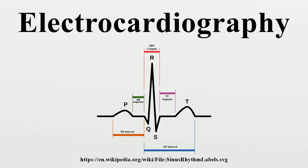The precordial leads lie in the transverse plane, perpendicular to the other six leads. The six precordial electrodes act as the positive poles for the six corresponding precordial leads, with Wilson's Central Terminal used as the negative pole.